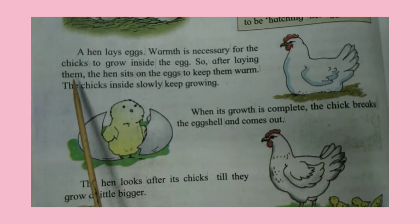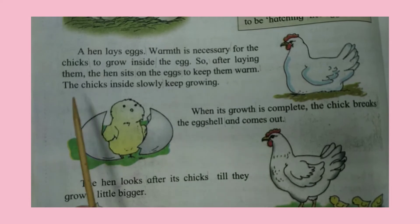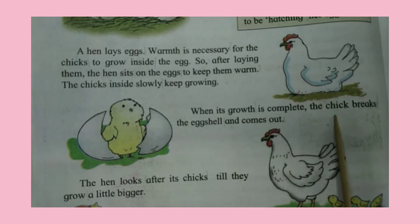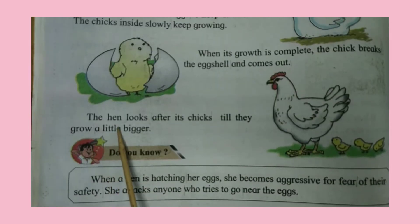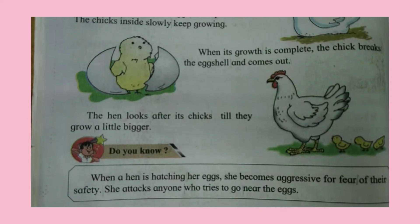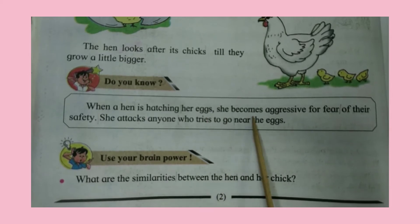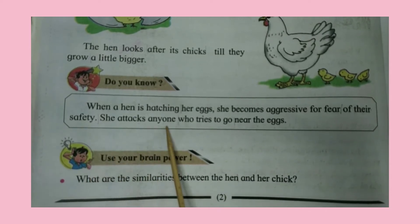So after laying them, the hen sits on the eggs to keep them warm. The chicks inside slowly keep growing. When its growth is complete, the chick breaks the eggshell and comes out. The hen looks after its chicks till they grow a little bigger. Do you know, when a hen is hatching her eggs, she becomes aggressive for fear of their safety. She attacks anyone who tries to go near the eggs.